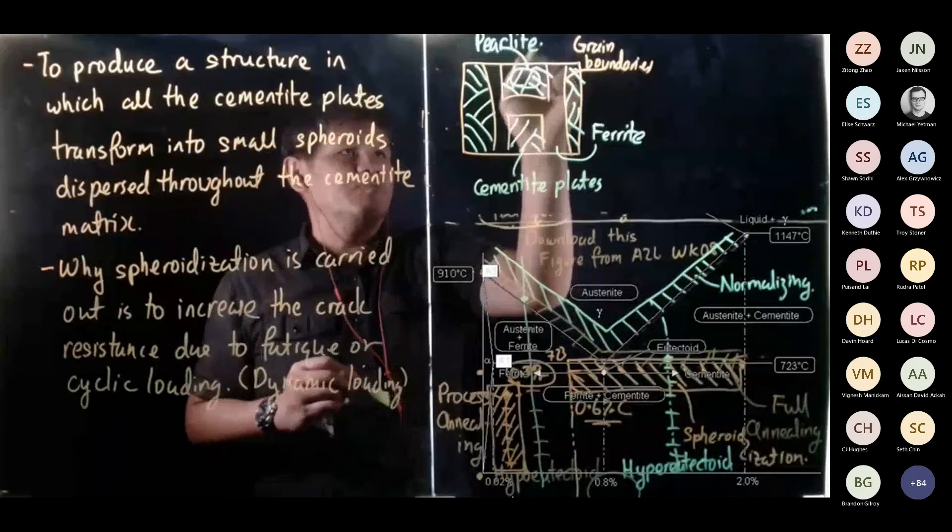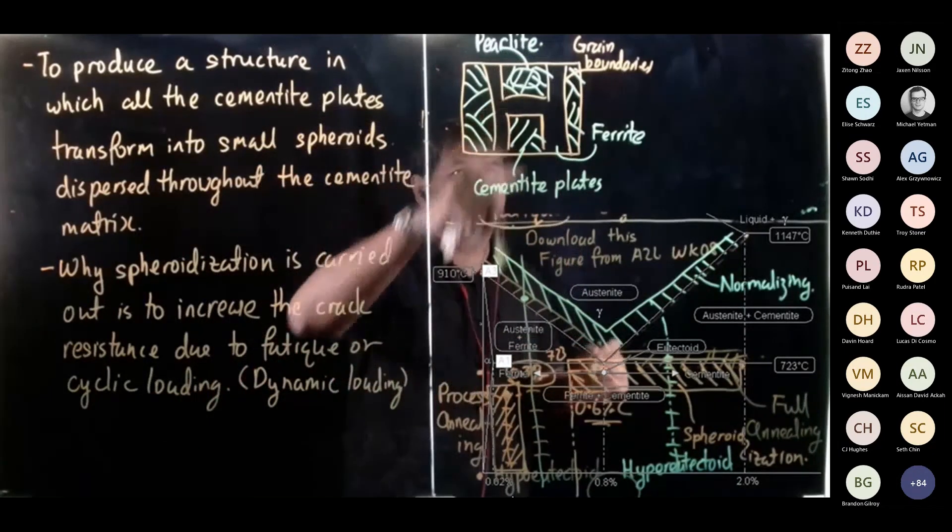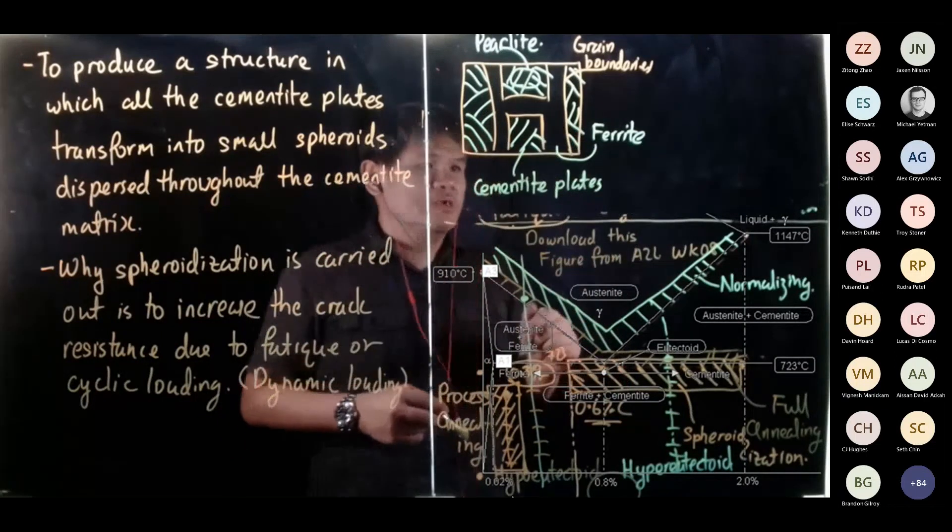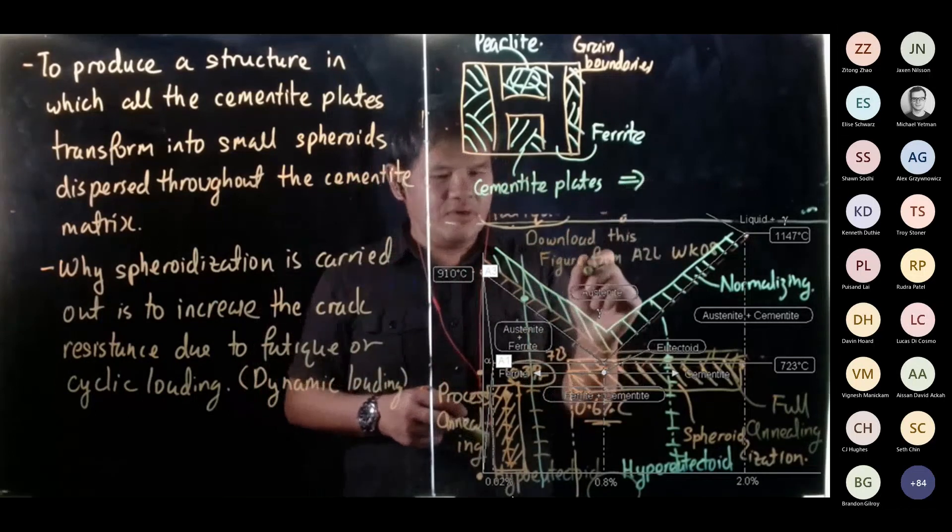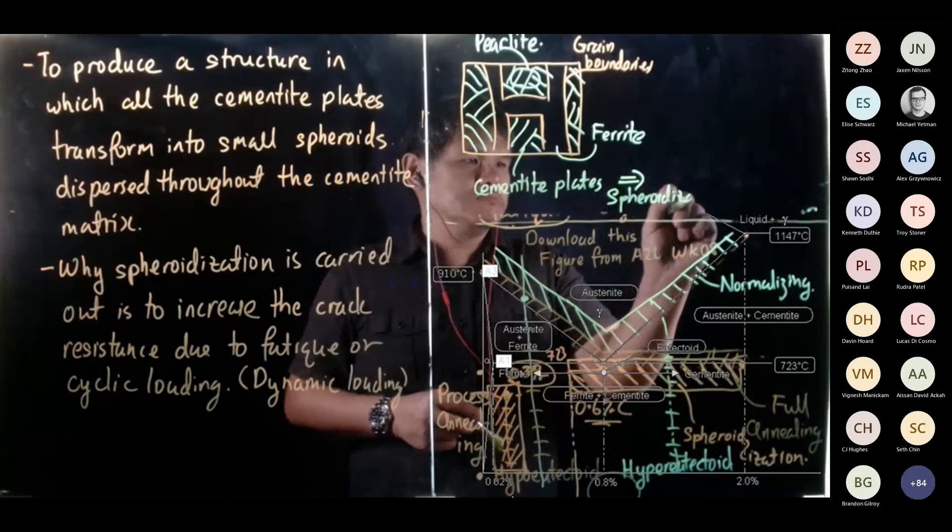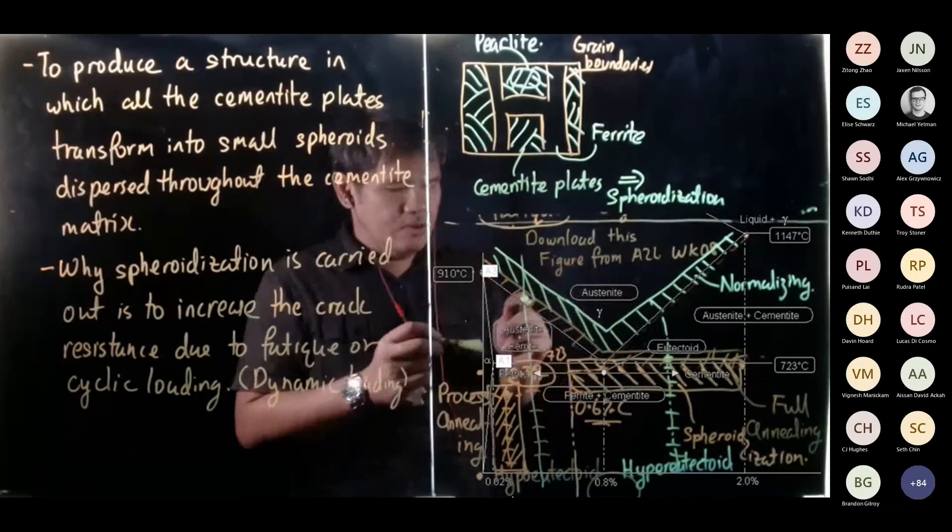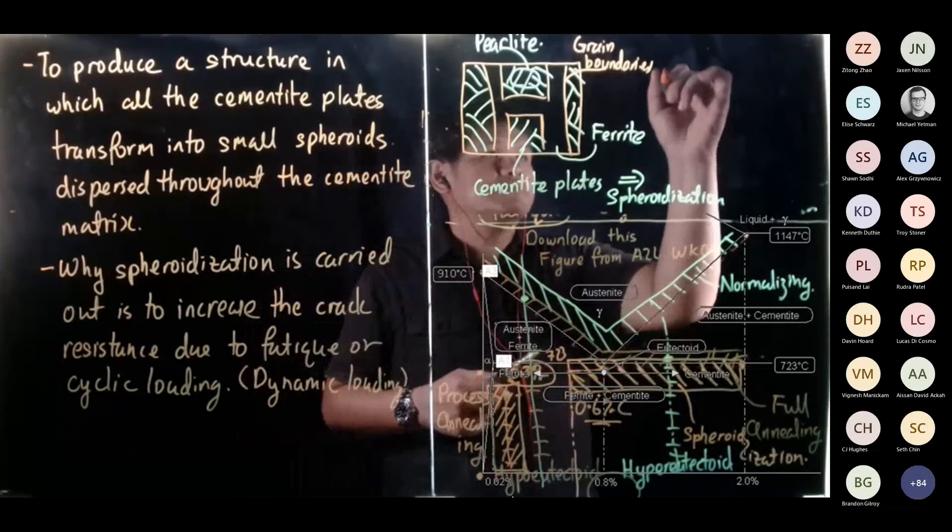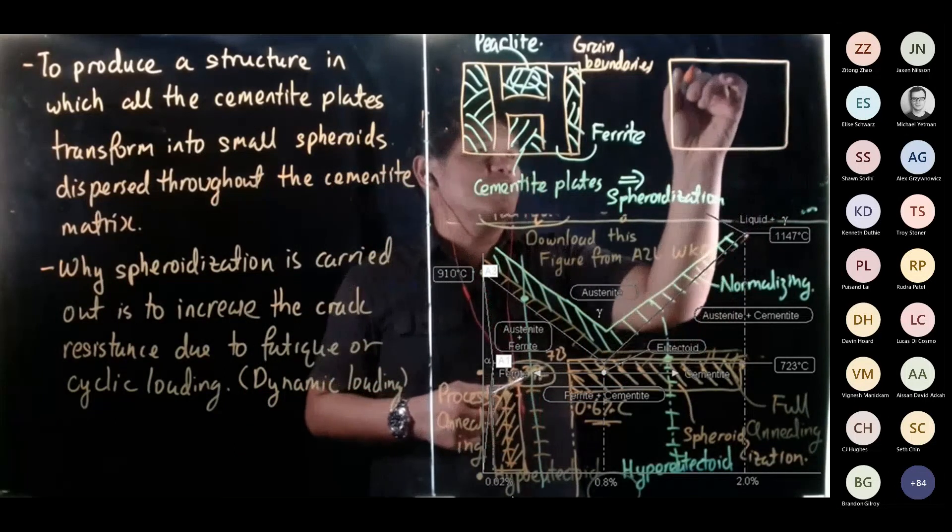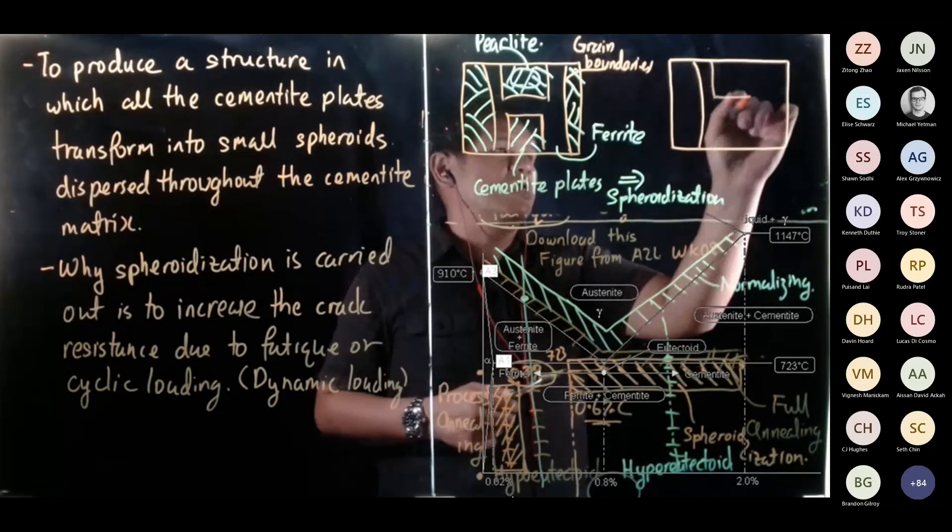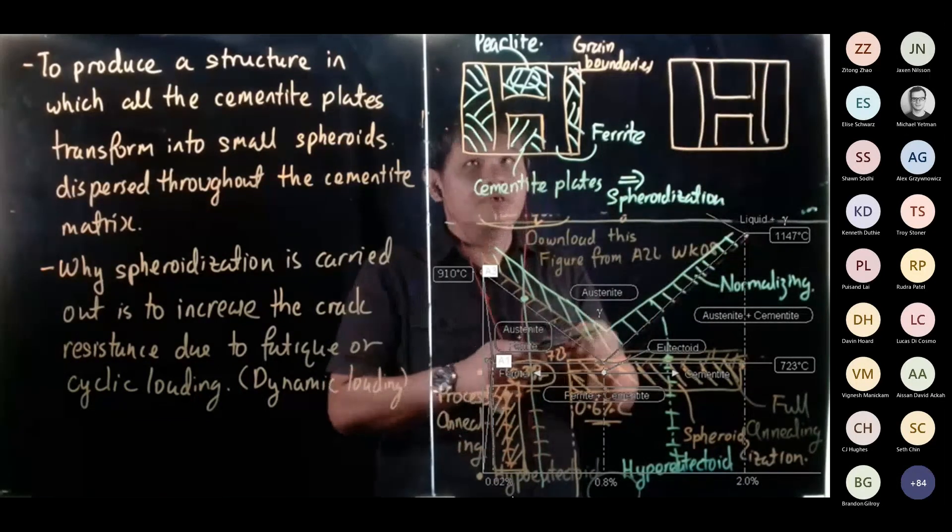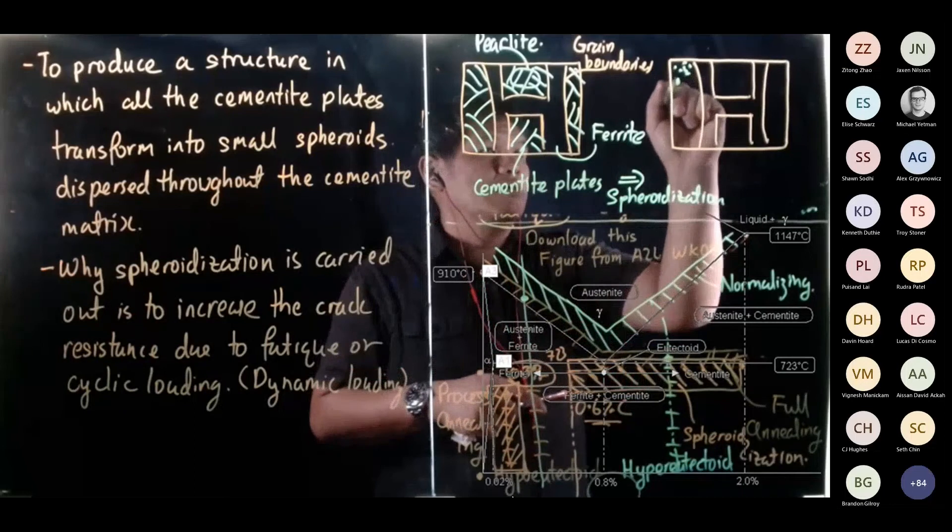So this region is called pearlite. Pearlite is a combination of ferrite, which is the uncolored part, and then you see the line, those are your cementite plates. Then when you go through spheroidization or spheroidizing, the microstructure now looks like this. As I wrote earlier, you don't see plates anymore. No more plates. What you see are little spheres dispersed.